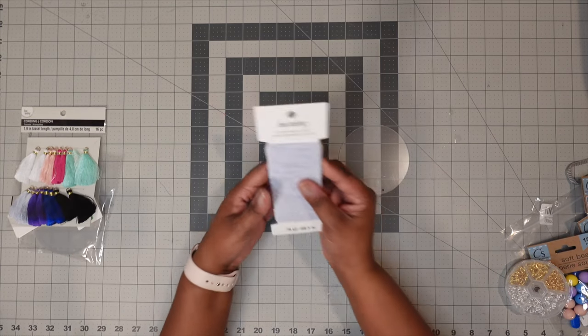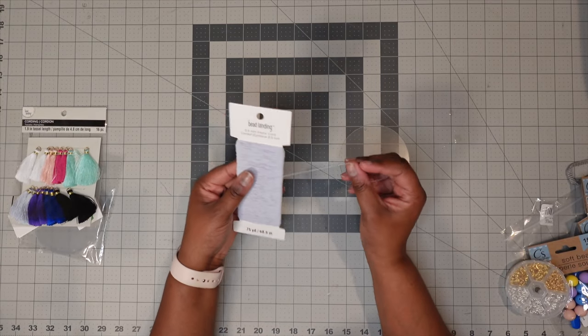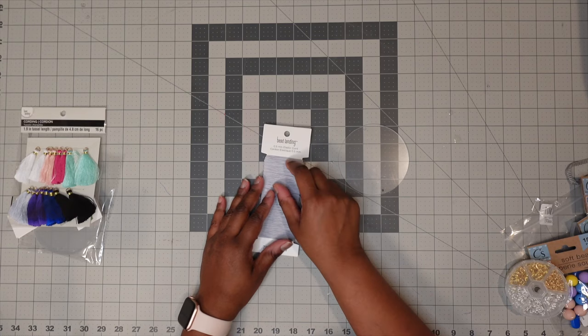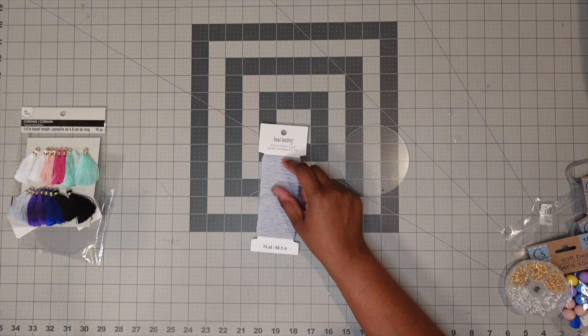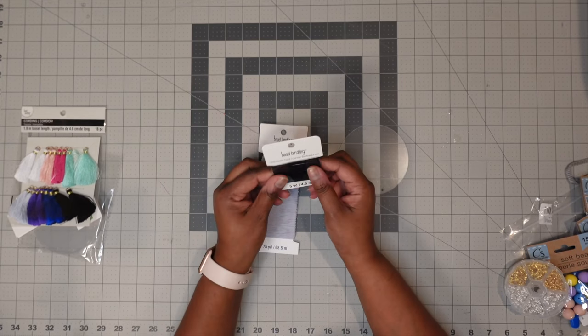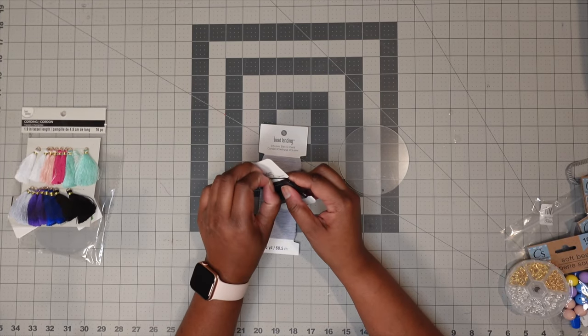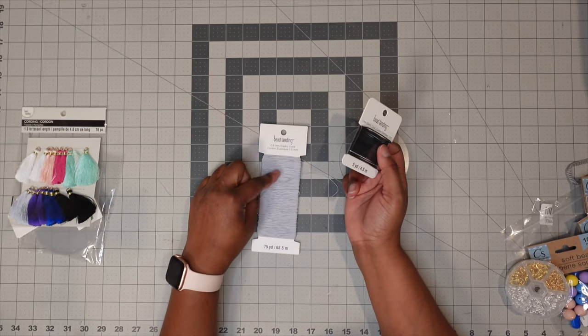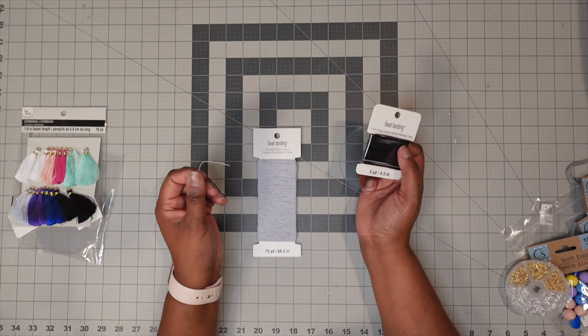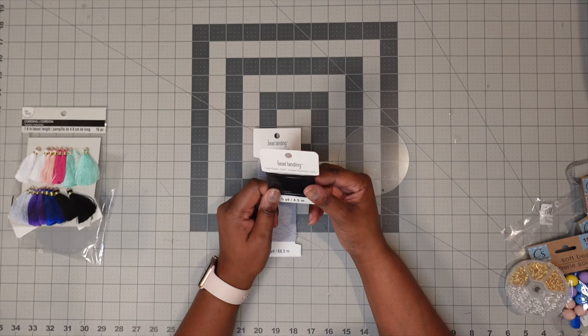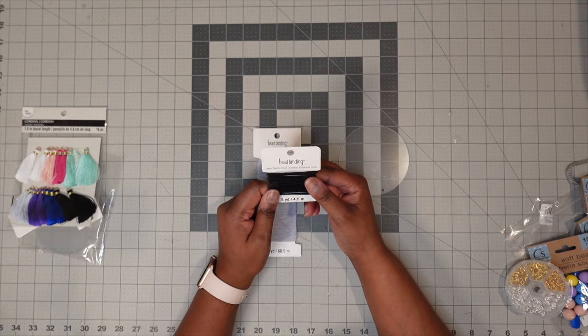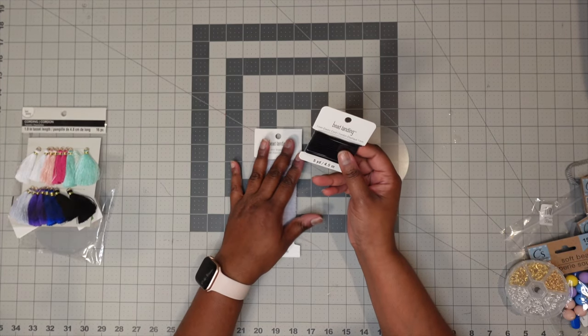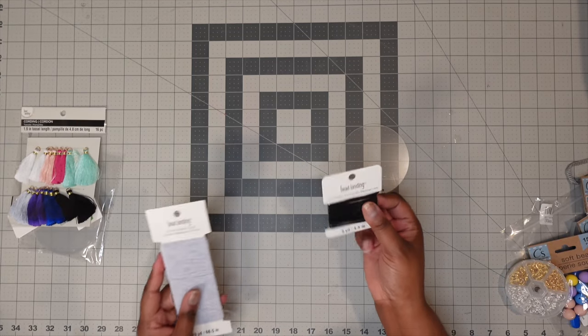And I also got some elastic cording, which this one is a half millimeter elastic cording. They do come in different sizes. I purchased the white. I also purchased black, which depending on what color of the design, you can purchase black as well. I purchased the one millimeter as well if you want something a little bit thicker. This was a five yard and this is a 75 yard. So I'm going to be using this half millimeter. Actually, you know what, with the color of the design, I think I'm going to go ahead and go with the black. It is thicker and we're going to be using black vinyl. So I think I'll go ahead and use the black today. So we'll use this one today.